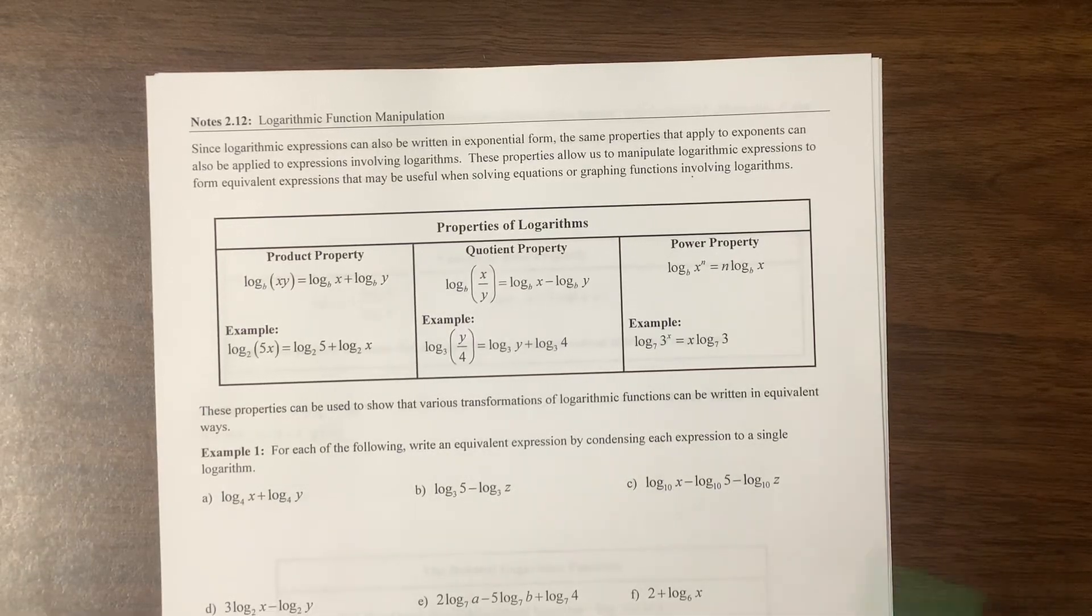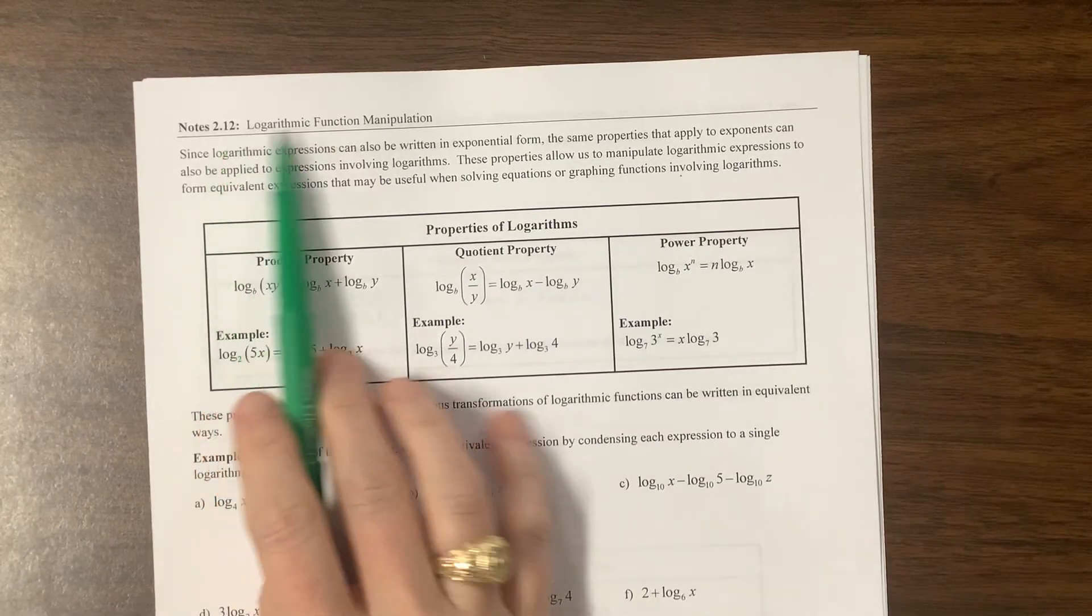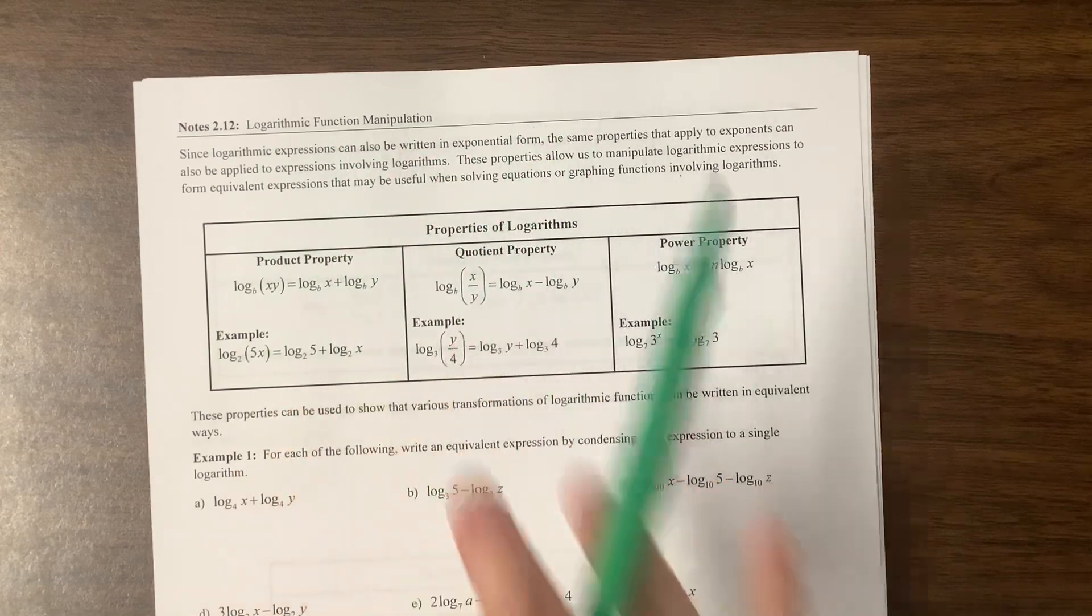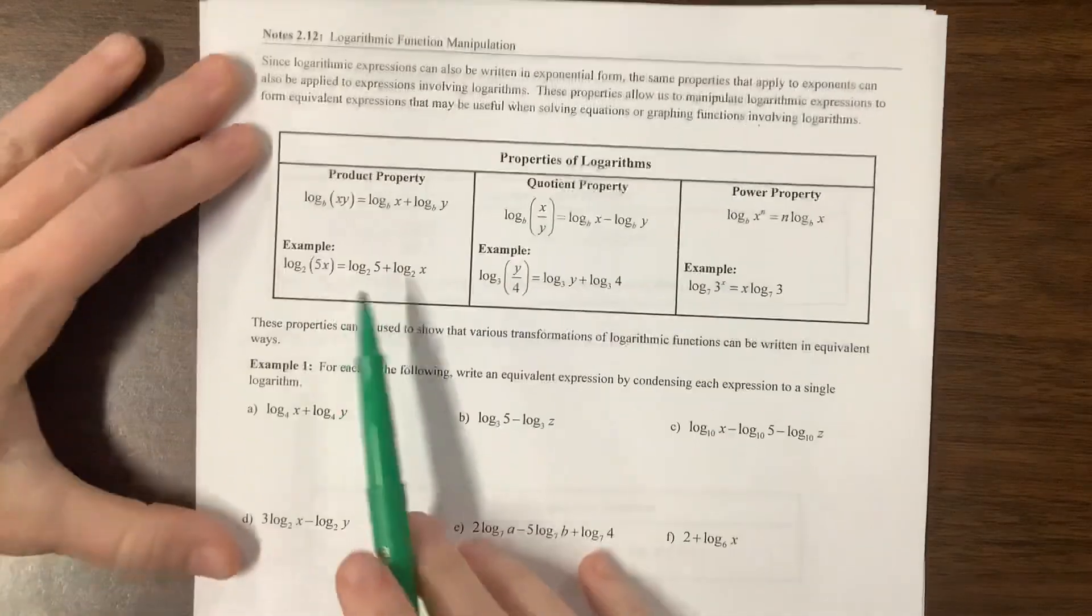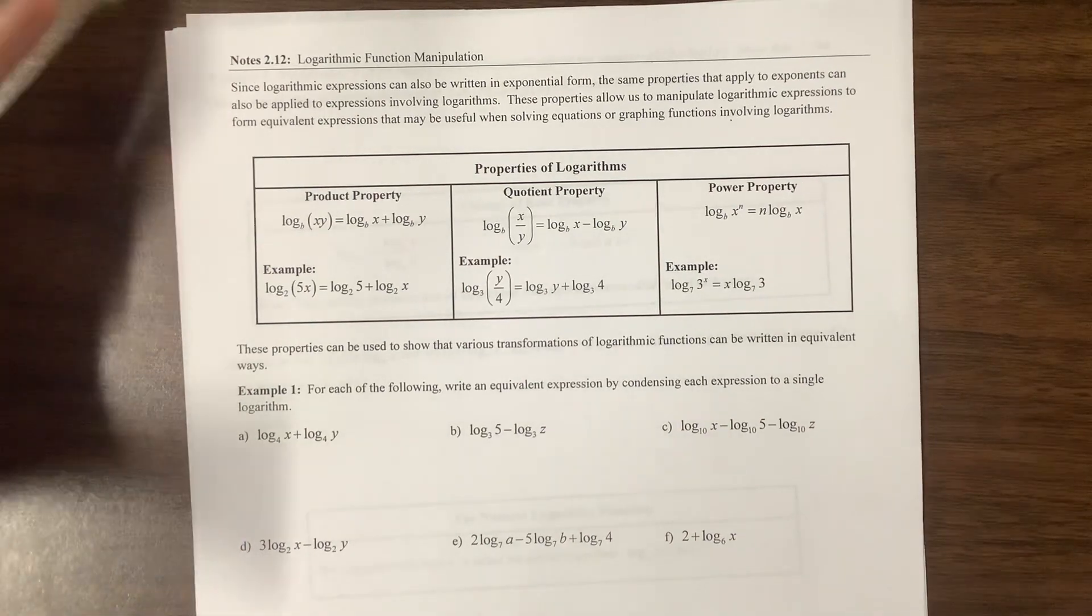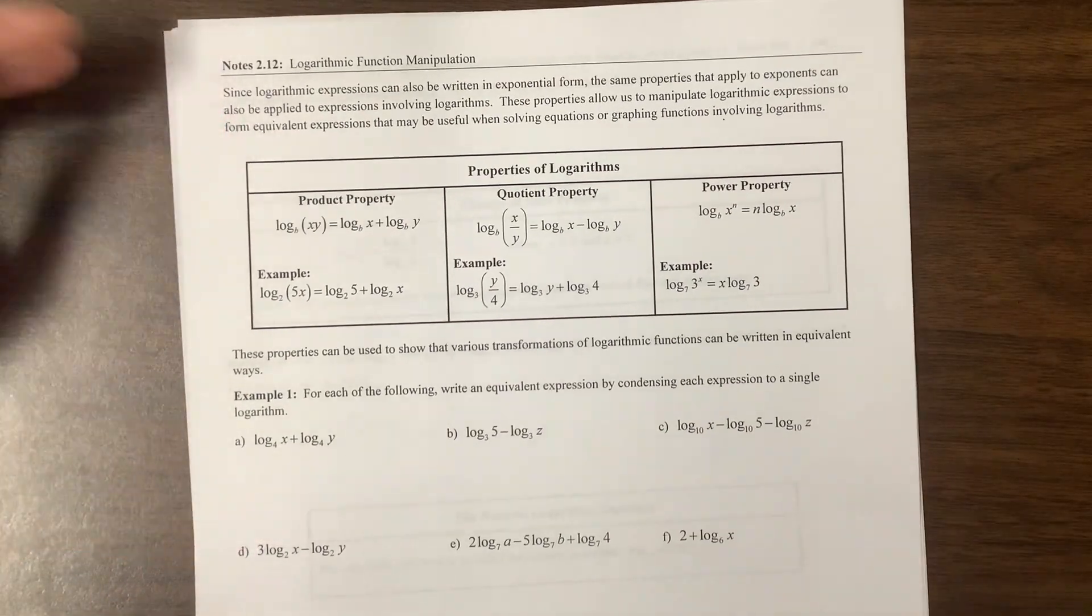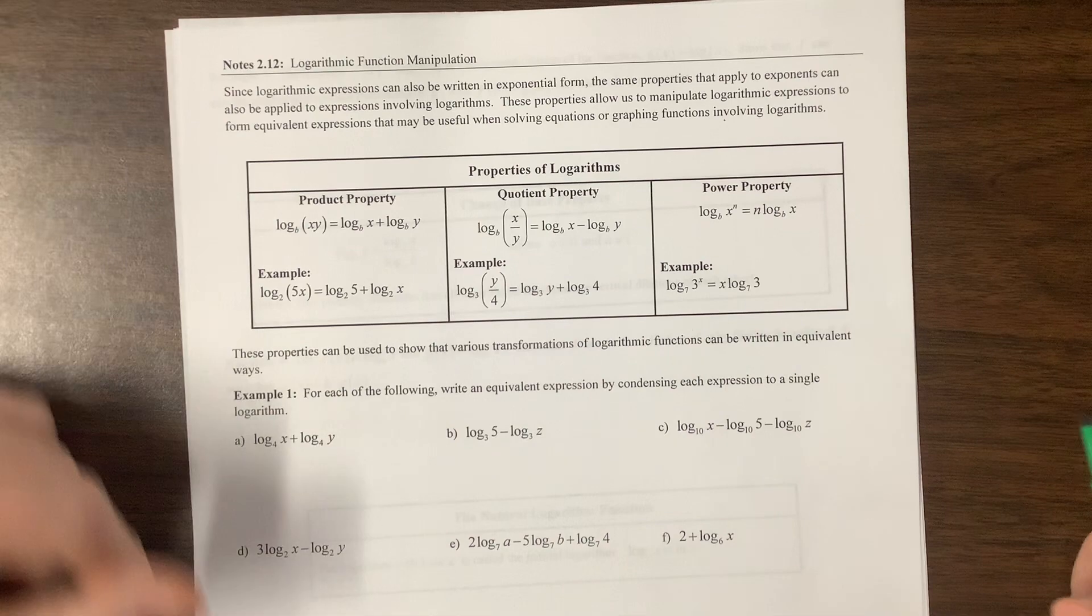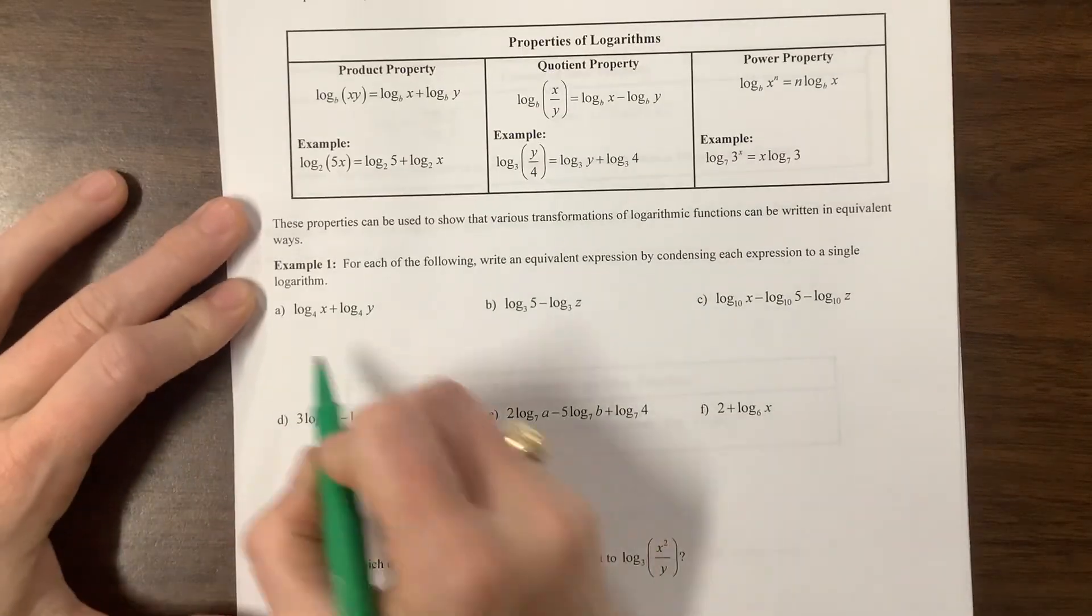Howdy, AP Breakout. It is another log video. So this is 2.12, logarithmic function manipulation. So apparently I jumped the gun when I taught these properties in 2.9. Whatever. So here they are. I already taught them. So let's just go jump in here.